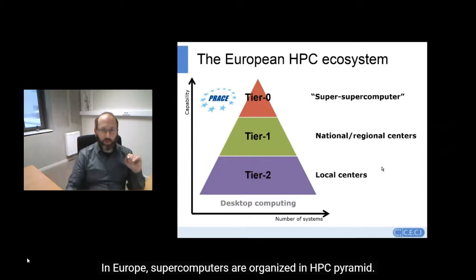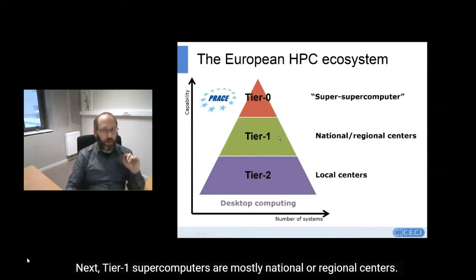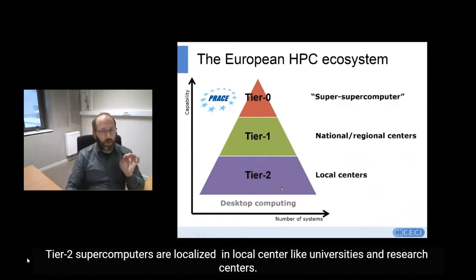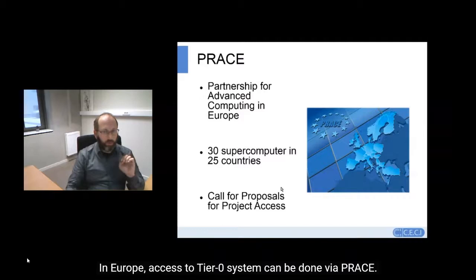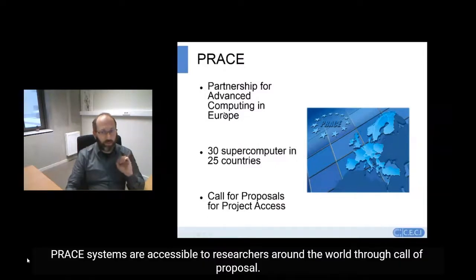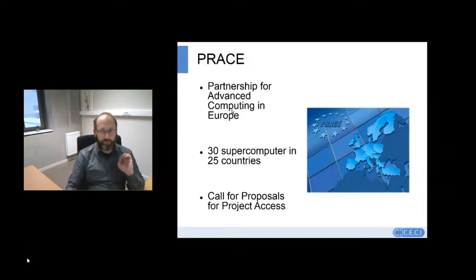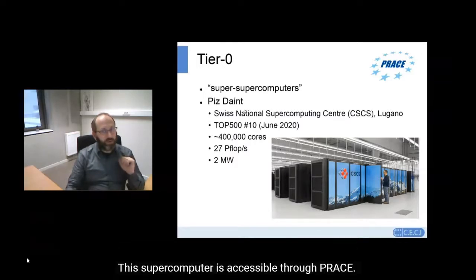In Europe, supercomputers are organized in an HPC pyramid. At the top of the pyramid, we find the most powerful supercomputers in Europe — Tier 0. Tier 1 supercomputers are mostly national or regional centers. Tier 2 supercomputers are localized in local centers like universities and research centers. In Europe, access to Tier 0 systems can be done via PRACE, the Partnership for Advanced Computing in Europe. PRACE systems are accessible to researchers around the world through calls for proposals. One of the most powerful Tier 0 supercomputers in Europe is Piz Daint, located at Lugano, and this supercomputer is also used by Meteo Suisse.